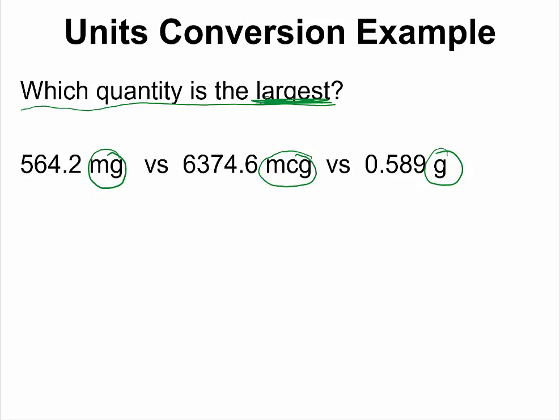Let us begin with the first one. We want to change it to gram. We know that milli means 10 to negative 3. So this becomes 564.2 times 10 to negative 3 grams. And if you use your calculator, you would see that this would give you 0.5642 grams.